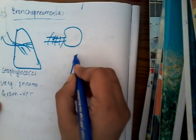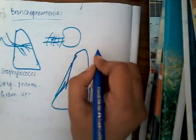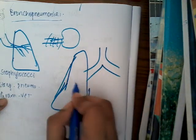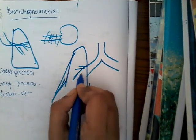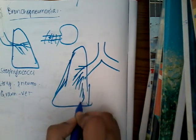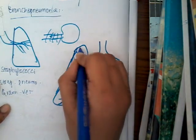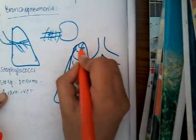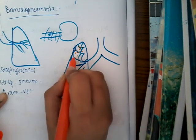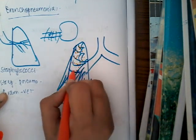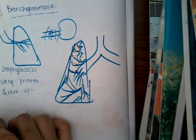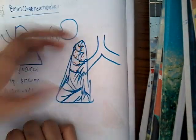Grossly, there is patchy consolidation. This affects one or more lobes. If this is the lung — the lobes, the two bronchi — these bronchi divide into bronchioles. Only the bronchioles are affected, and as a result there is patchy consolidation. Here there is consolidation, and in the middle the interstitium is normal. So there is only patchy consolidation, which can involve either one lobe or both lobes or more than one lobe.